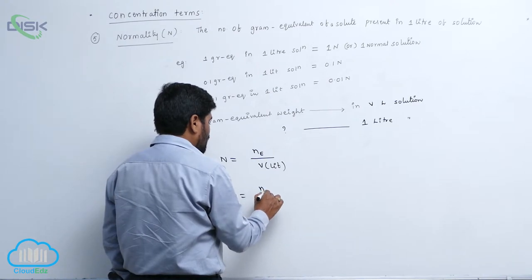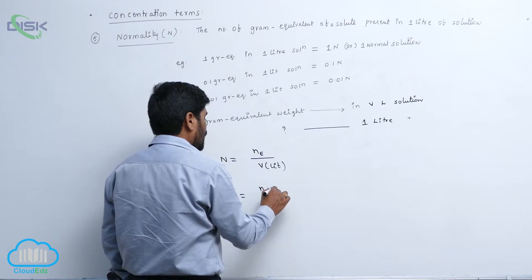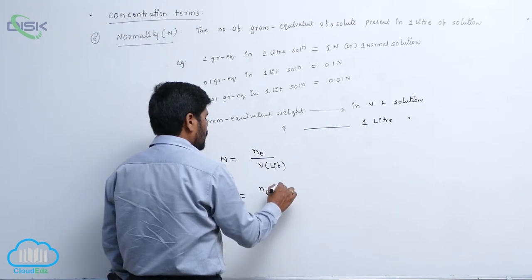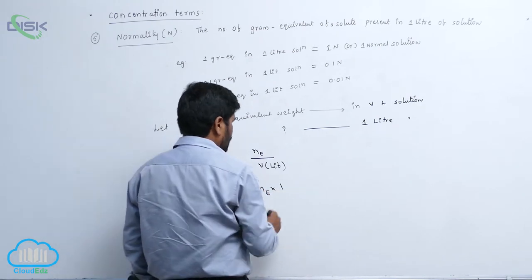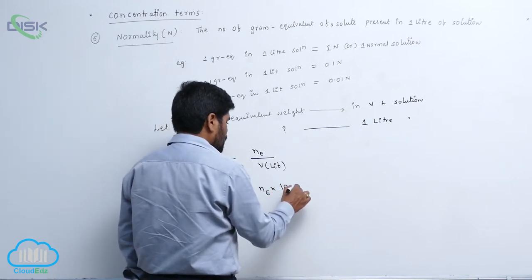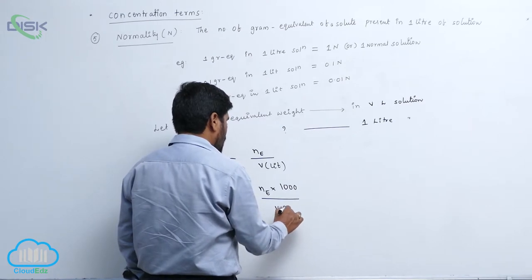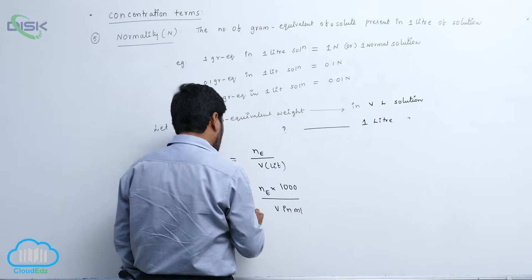N equivalent weight into 1 by V. So therefore it becomes 1000 by V in ml.